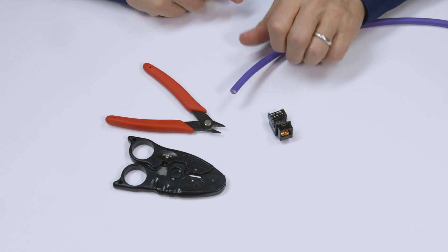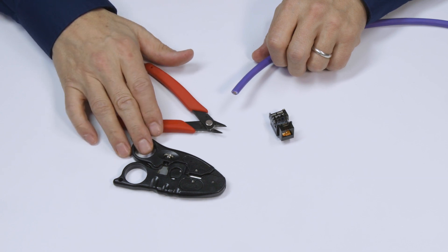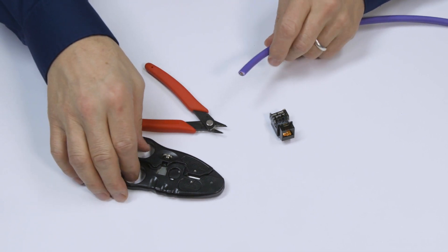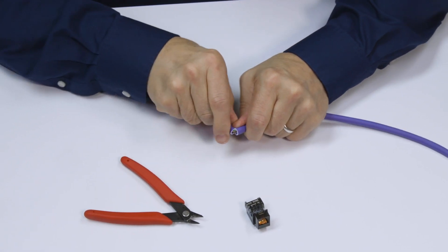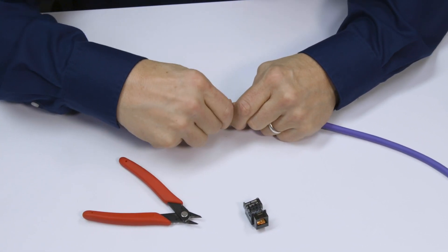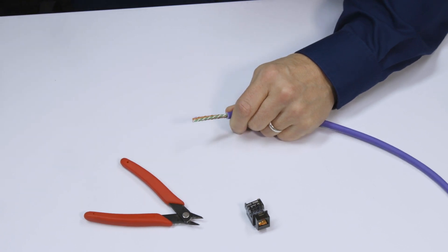Begin by using a stripping tool to remove about four to five centimeters of jacket. Go around once to make sure the jacket is scored and remove the jacket.